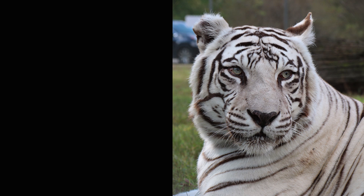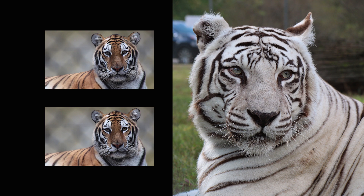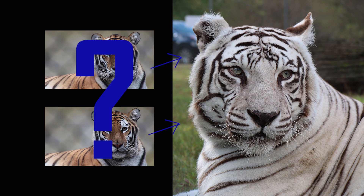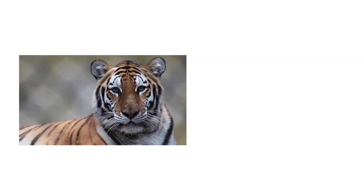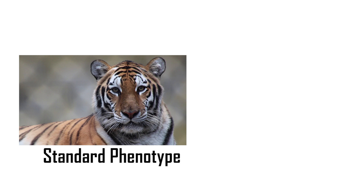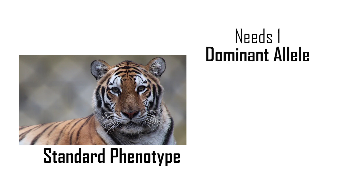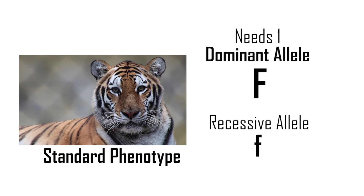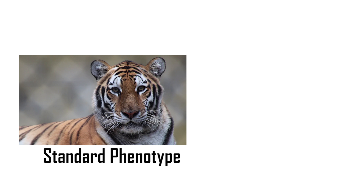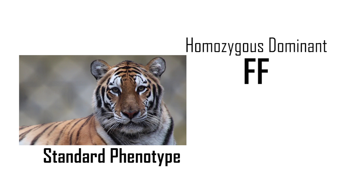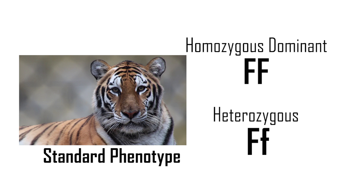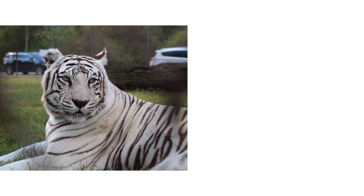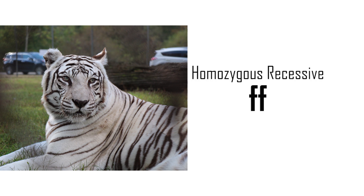Now, I'm going to try to stump you a little bit. Can a white tiger have two parents with a standard phenotype? Let's use a Punnett square to help us. Remember, a standard phenotype tiger only needs one dominant allele in order to show up in its phenotype. Let's call this dominant allele for fur coloration capital F, and the recessive allele lowercase f. So its genotype could be homozygous dominant, capital F capital F, or heterozygous, capital F lowercase f. However, the white tiger we are trying to make needs to be homozygous recessive, or have two recessive genes in order to be a white phenotype — lowercase f, lowercase f.